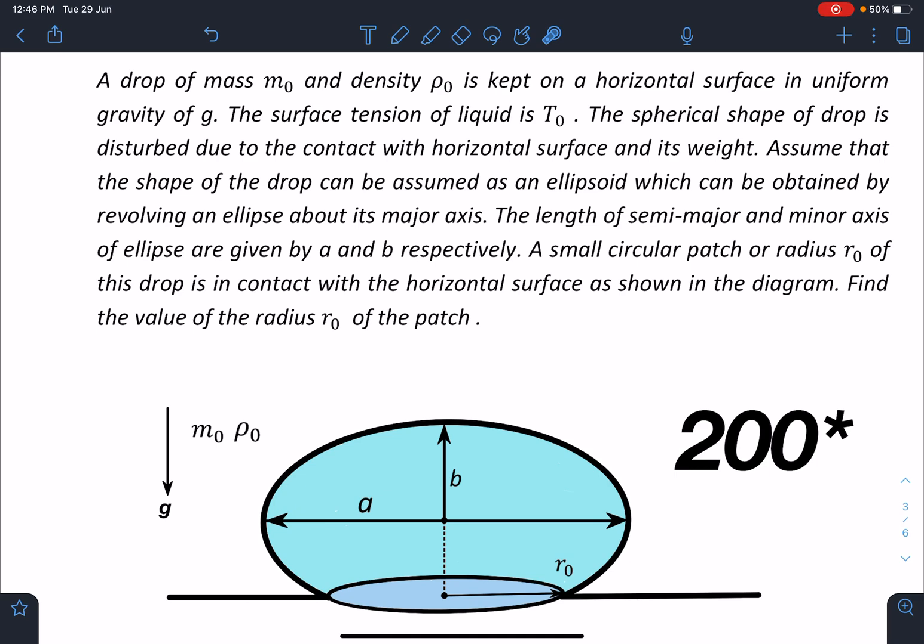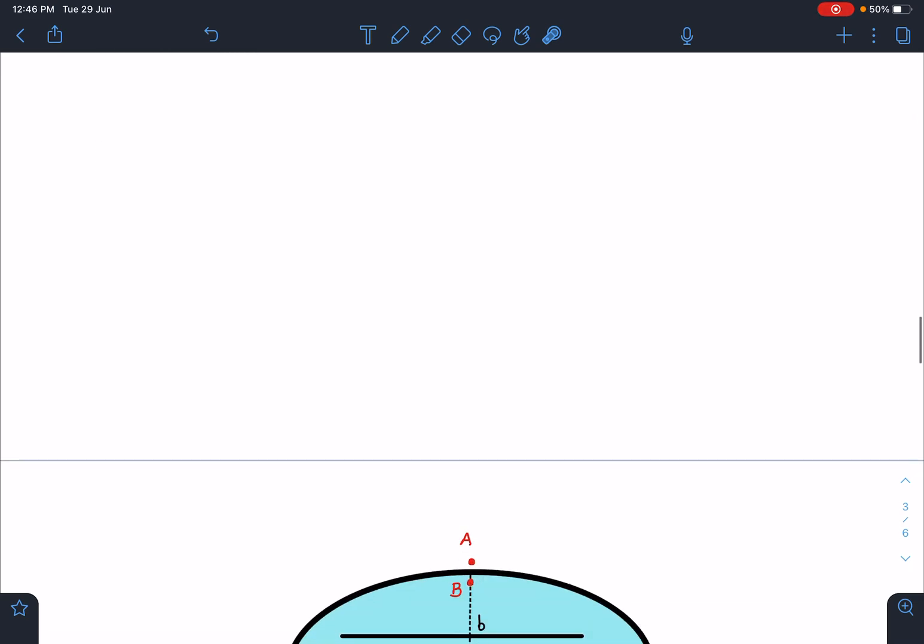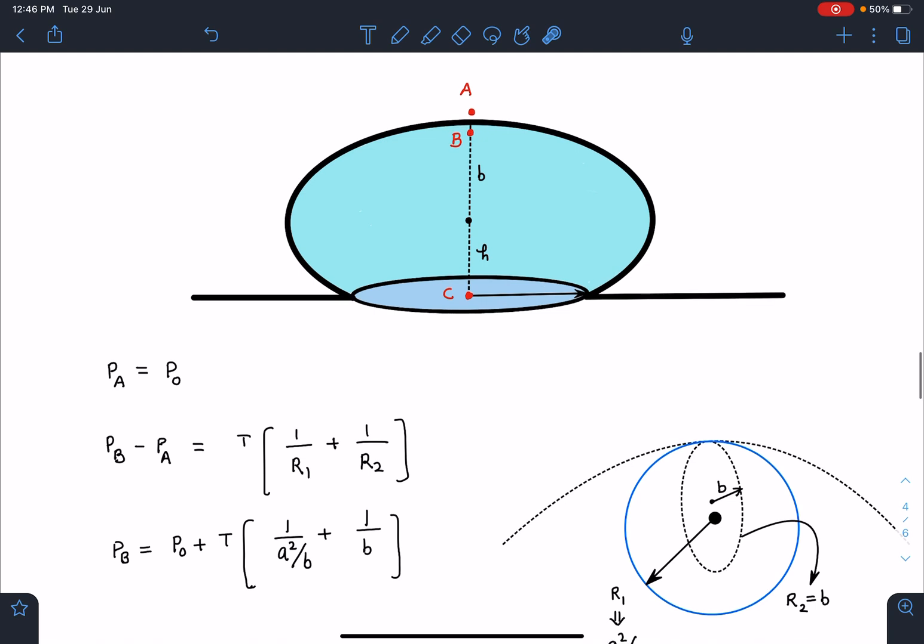A small circular patch of radius r₀ of this drop is in contact with the horizontal surface as shown in the diagram. Find the value of radius r₀ of this patch.